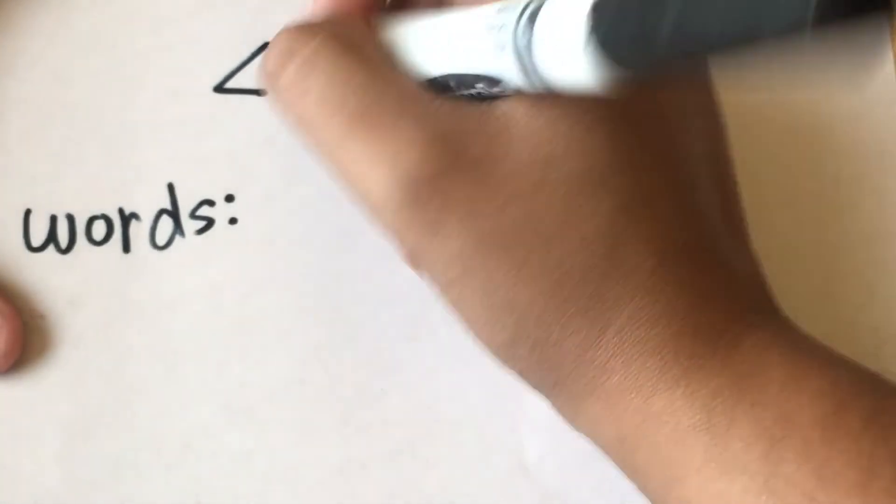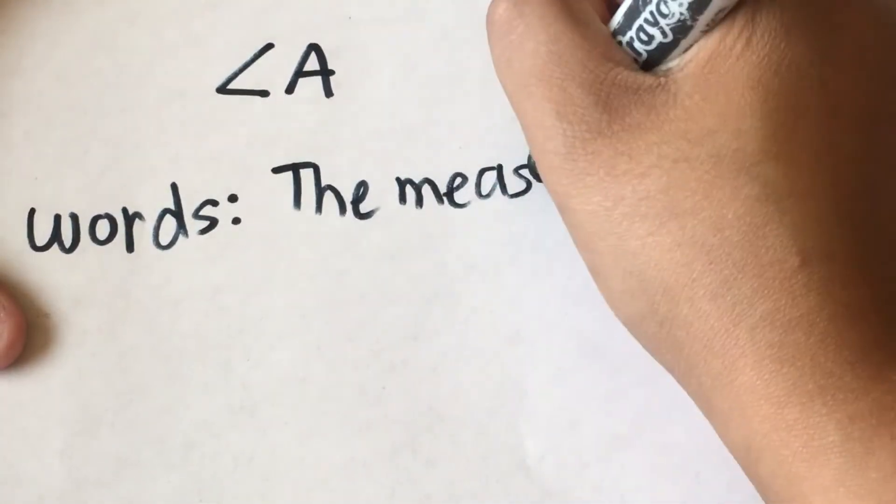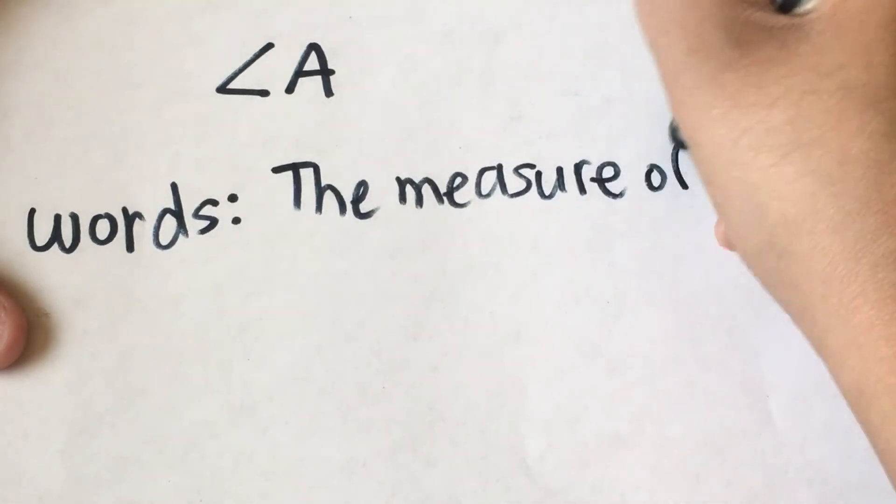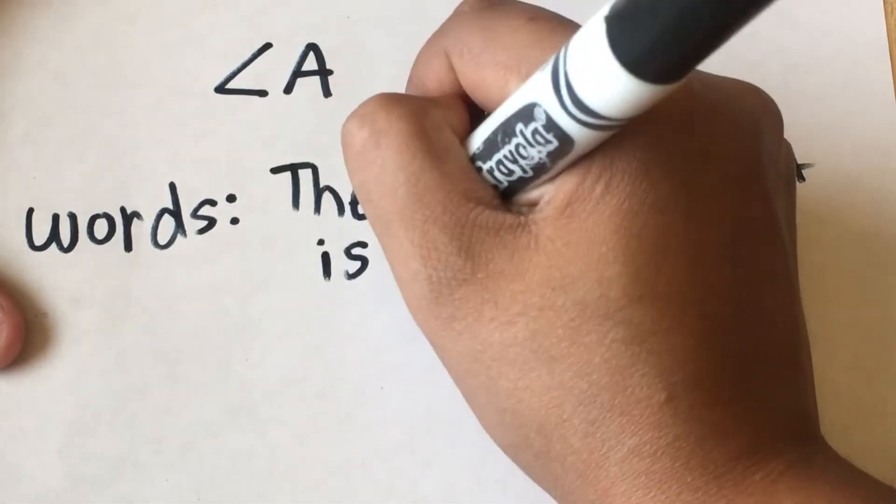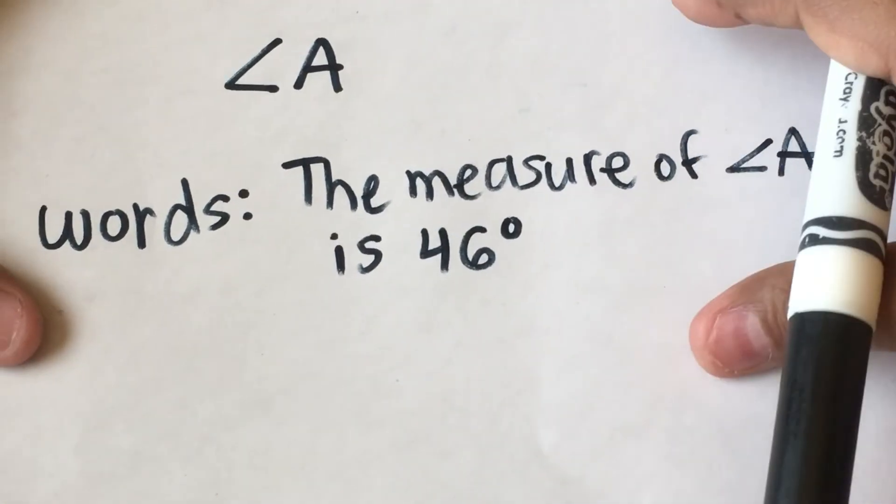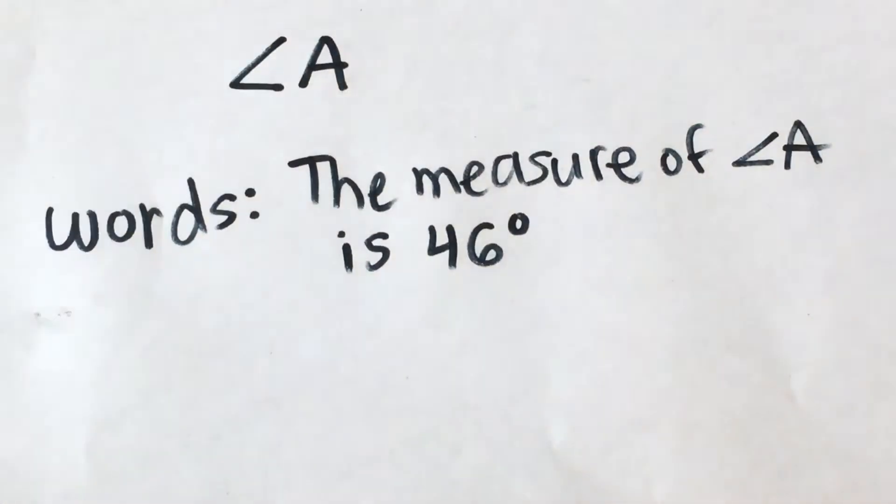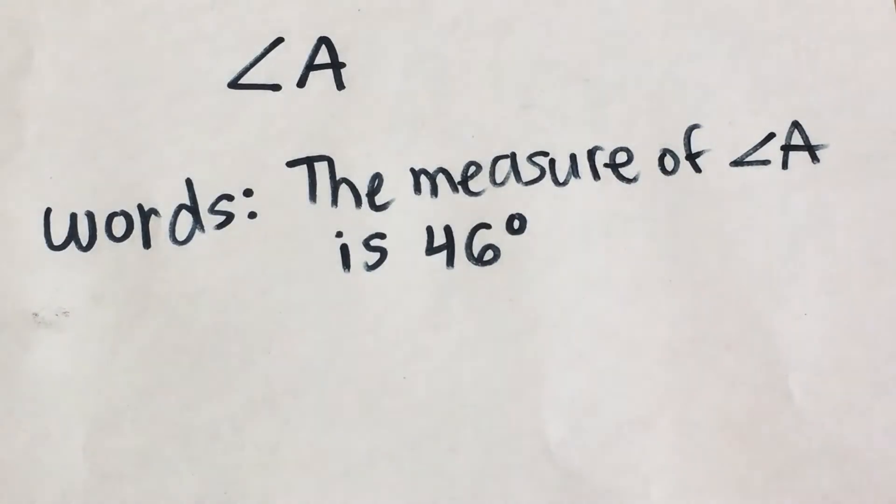Right, and I'm going to write: the measure of angle A is, and the angle was 46 degrees, not inches, because again we're looking at measurement of angles, not segments. And it's a little dot on top, that's how you denote degrees.